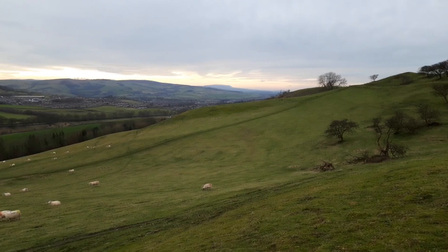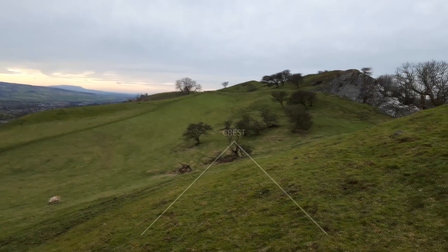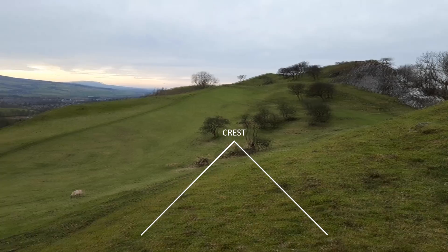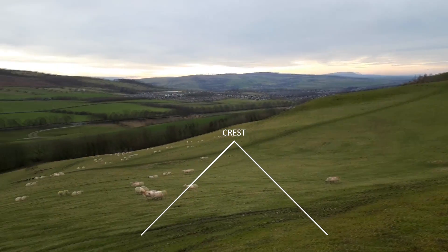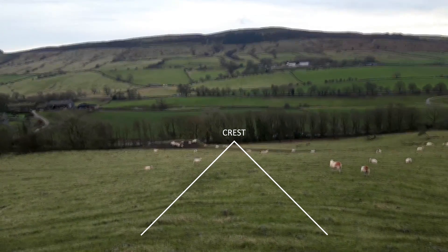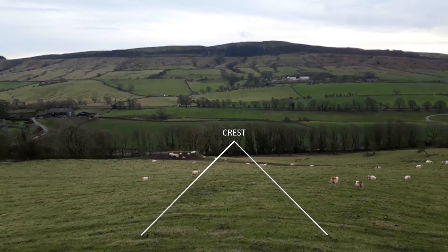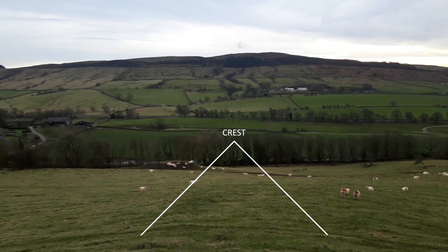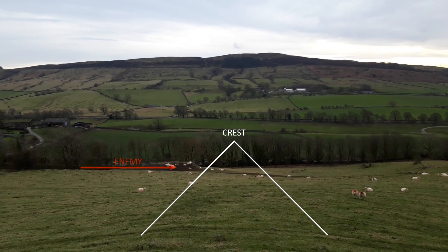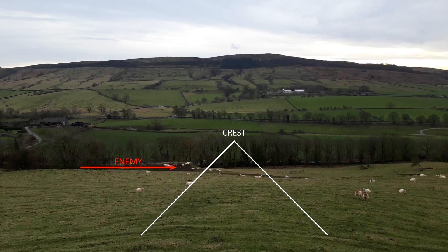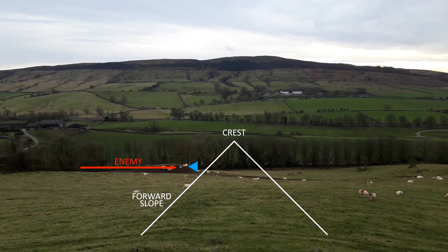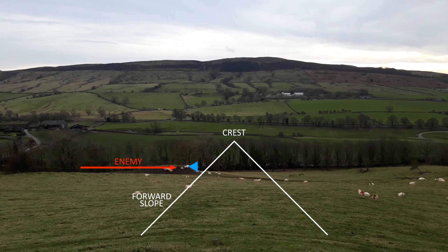To do so, I am standing on a ridge, which is nothing more than a linear hill — it's got a slope on either side. A slope is just a gradient change. Whether it is forward or reverse depends on its spatial relationship to the enemy. For the purposes of this video, we're going to say the enemy is over there, on the other side of the valley. That means that right now, I'm on the forward slope of our ridge.